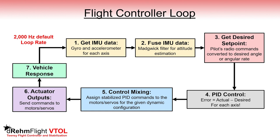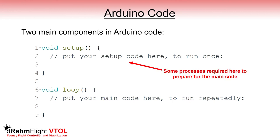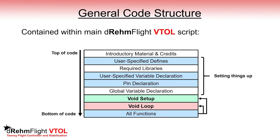So now that we understand the required processes, let's take a closer look at the actual DreamFlight VTOL code. DreamFlight uses the Arduino environment to make it easy to change and upload code to the flight controller. There are two main components in the Arduino code to be aware of. The void setup is a section of the code that is run one time on startup — we'll use this to initialize communication with the receiver and IMU. The void loop is where we actually implement the flight controller loop we just discussed.